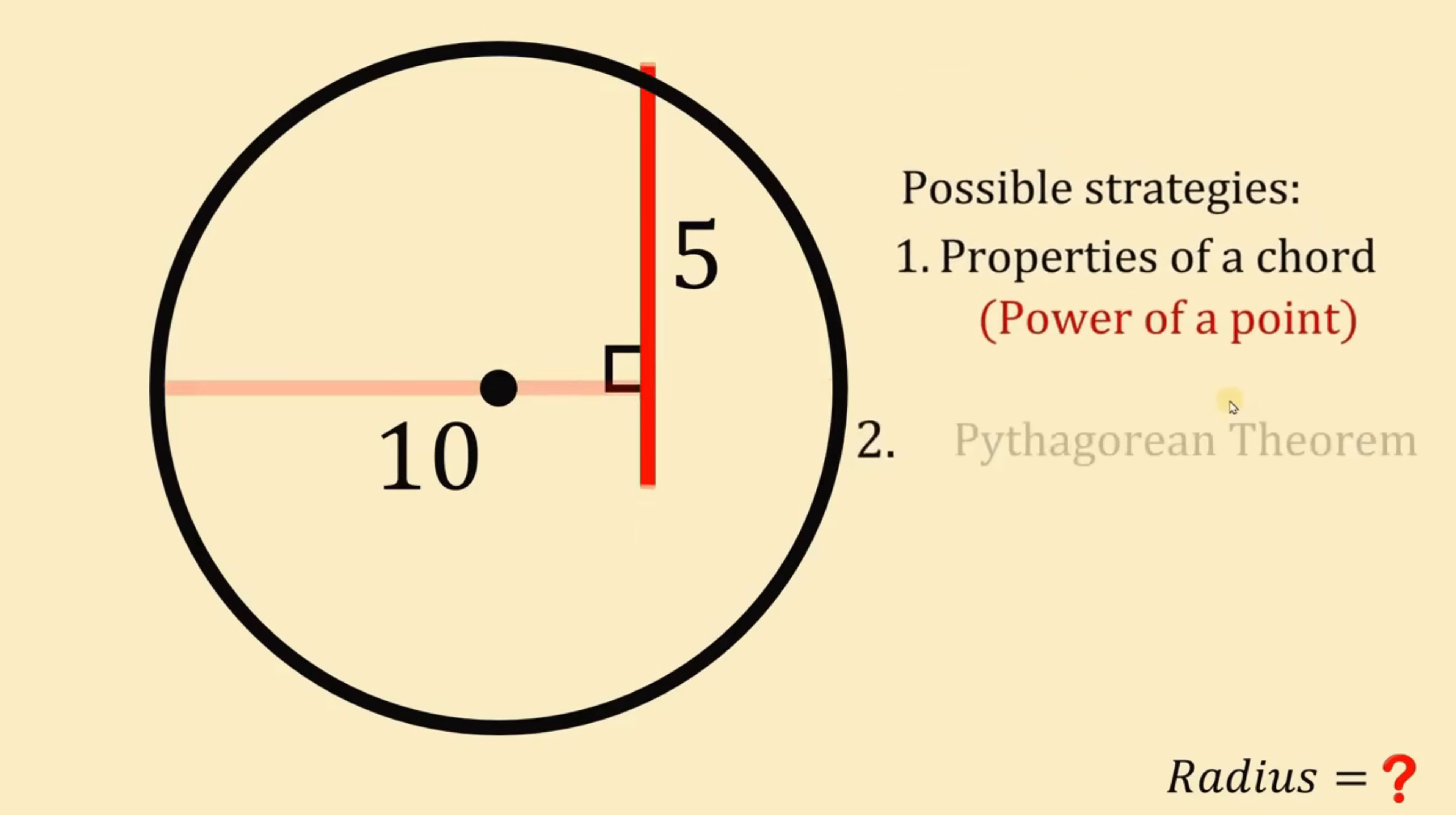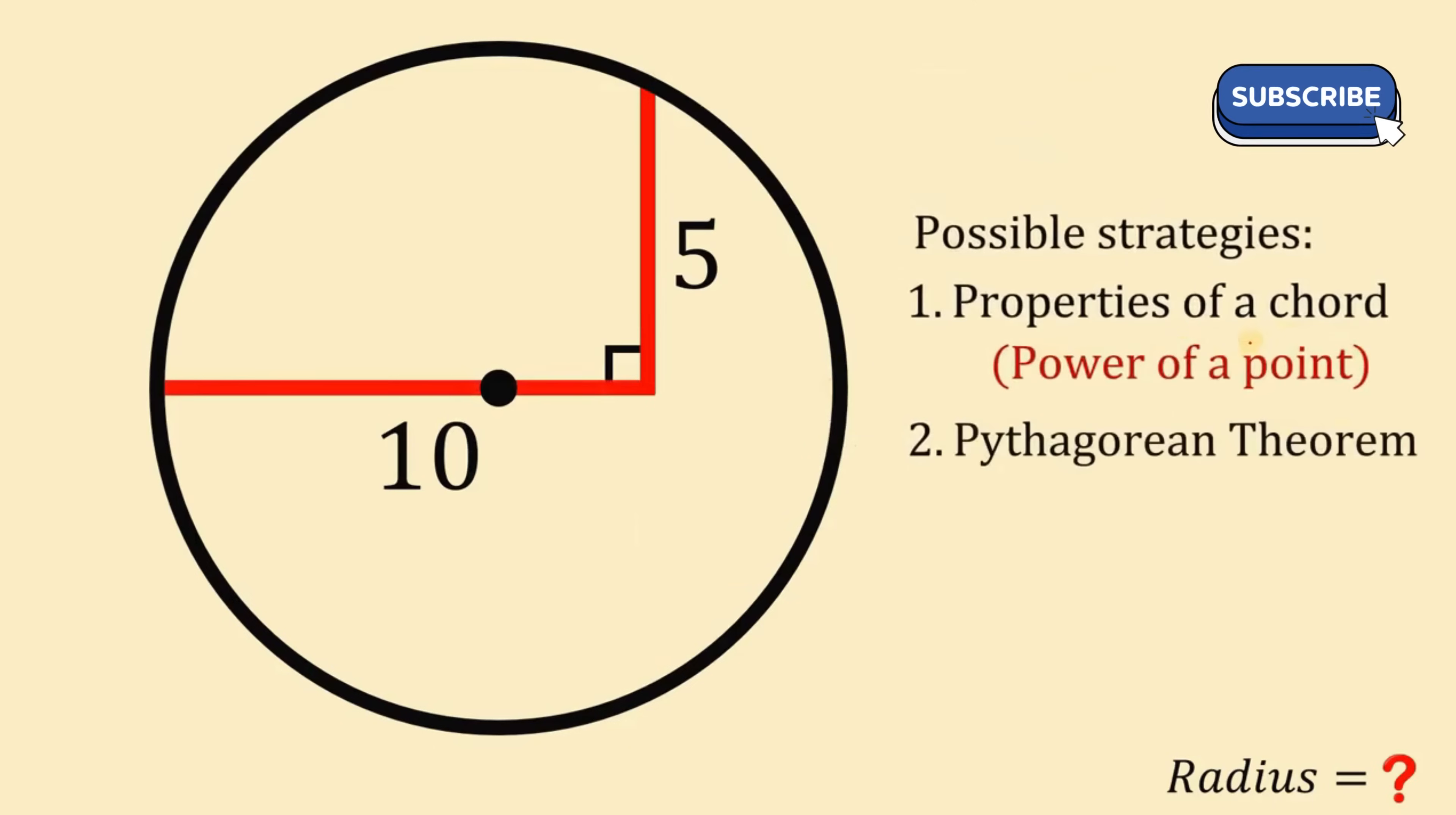Therefore, using our first strategy, properties of a chord and power of a point or the chord-chord power theorem, we get that the length of the radius of this circle given this condition is simply equal to 6.25 units.